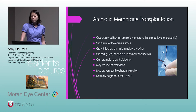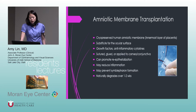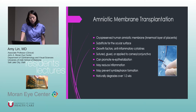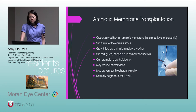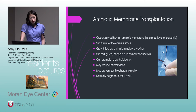Amniotic membrane is from the innermost layer of the placenta, and can be dried or cryopreserved. Cryopreserved is felt to be more beneficial. It acts as a substitute for the ocular surface — these patients have sloughed their entire ocular mucosa and we're trying to replace it, while also delivering anti-inflammatory treatment directly. There are growth factors and anti-inflammatory cytokines within the amniotic membrane. It promotes re-epithelialization, reduces inflammation, and prevents symblepharon formation. It naturally degrades over one to two weeks.